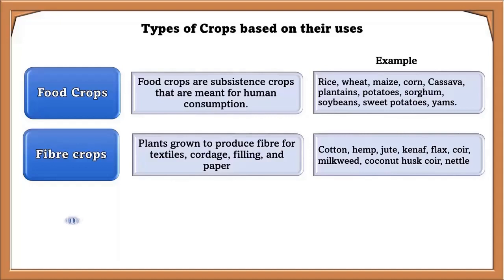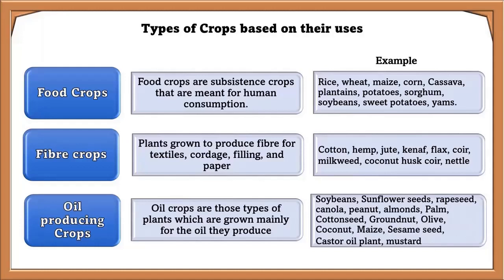Oil-producing crops are plants grown mainly for the oil they produce. These plants can be processed and broken down into their primary components including oil, and also supply raw material for biodiesel production. Examples include soybeans, sunflower seeds, rapeseed, canola, peanut, almonds, palm, cottonseed, groundnut, olive, coconut, maize, sesame seeds, castor oil plant, and mustard.